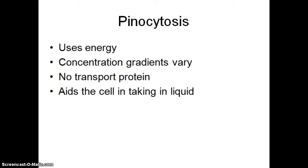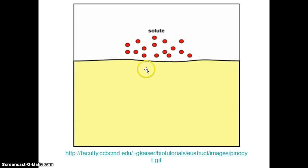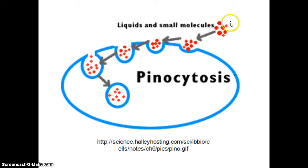Pinocytosis uses energy. The concentration gradients vary, we don't need any transport protein, and it aids the cell in bringing in liquids. There's an animation link here — cut and paste it into your browser and watch the process of pinocytosis occurring. This picture shows pinocytosis — we're taking liquid into the cell.